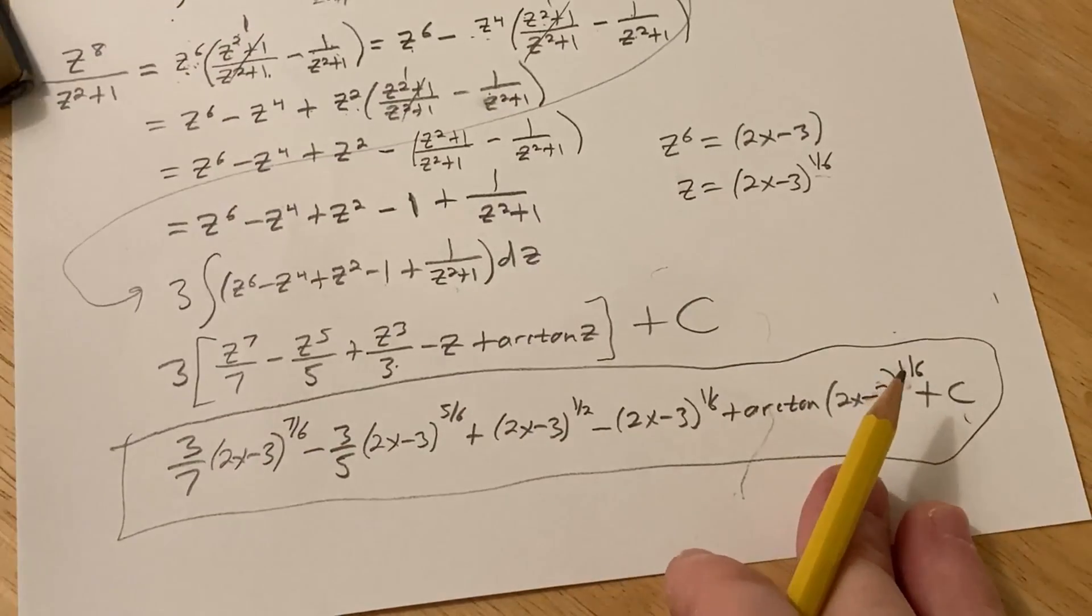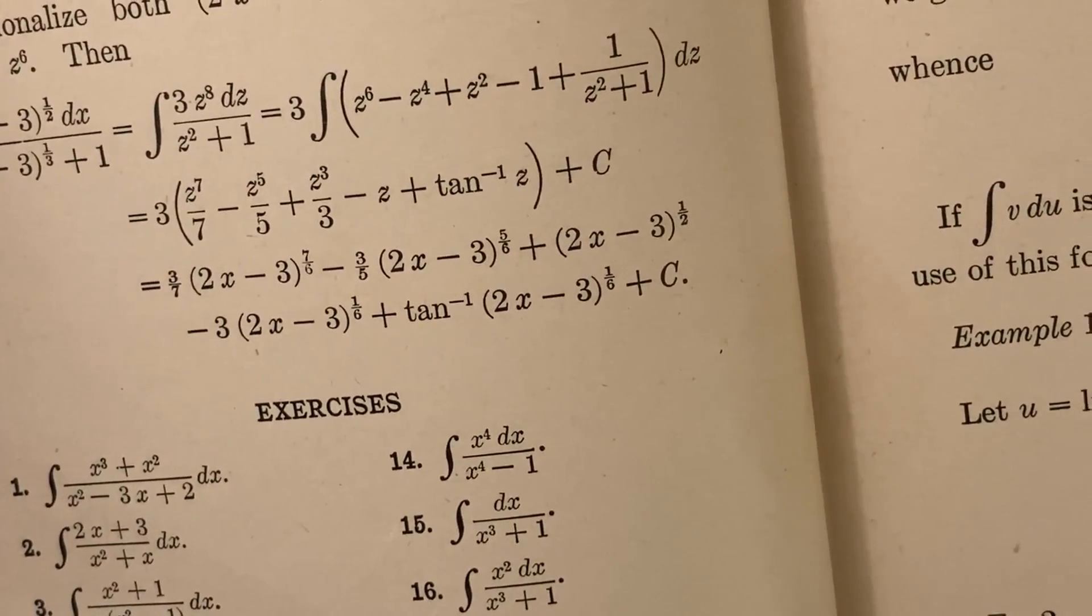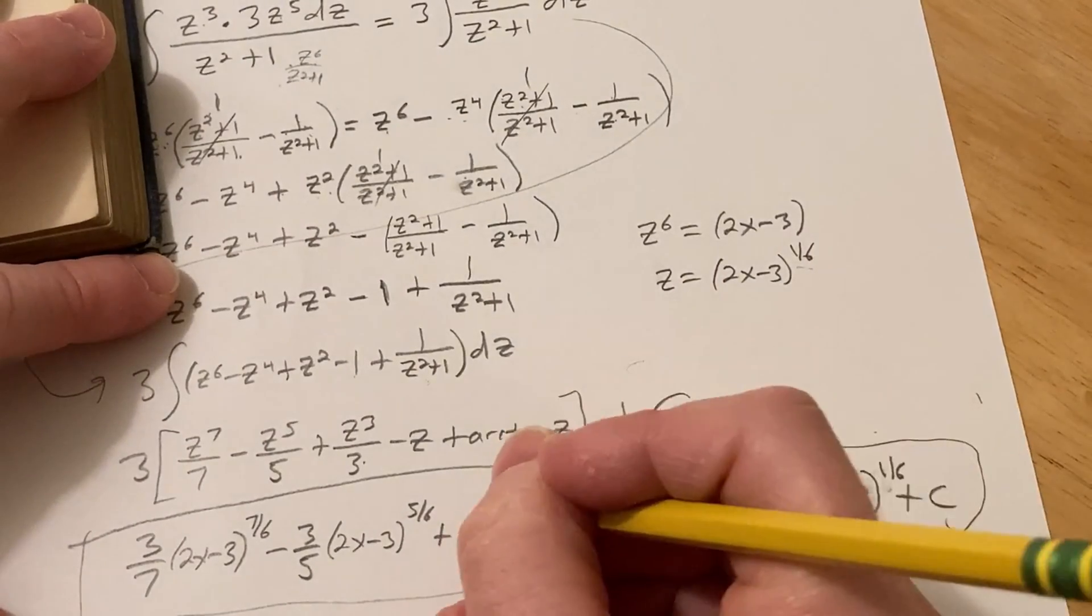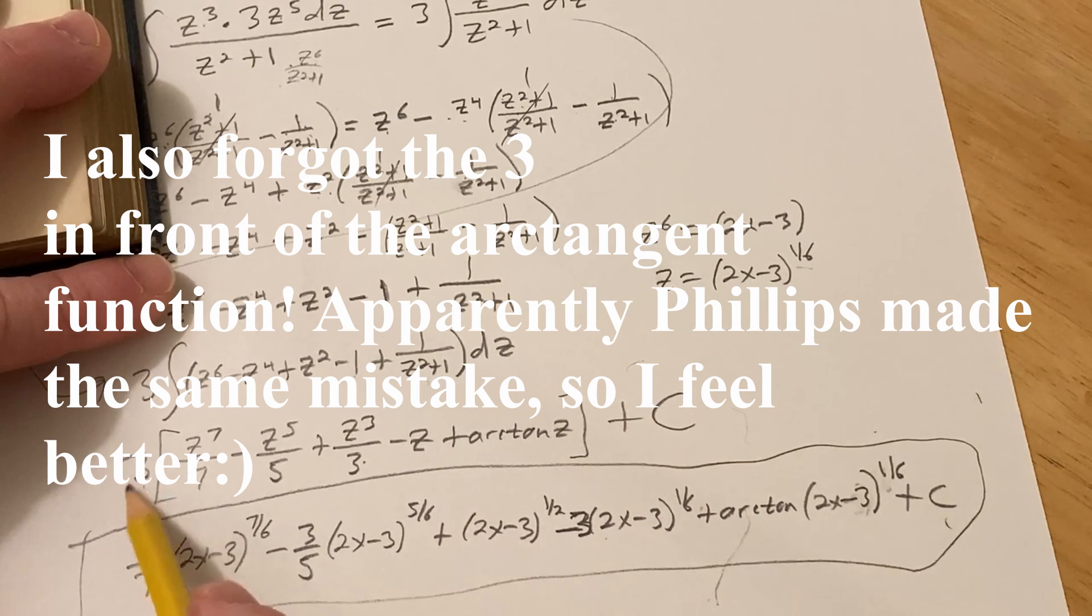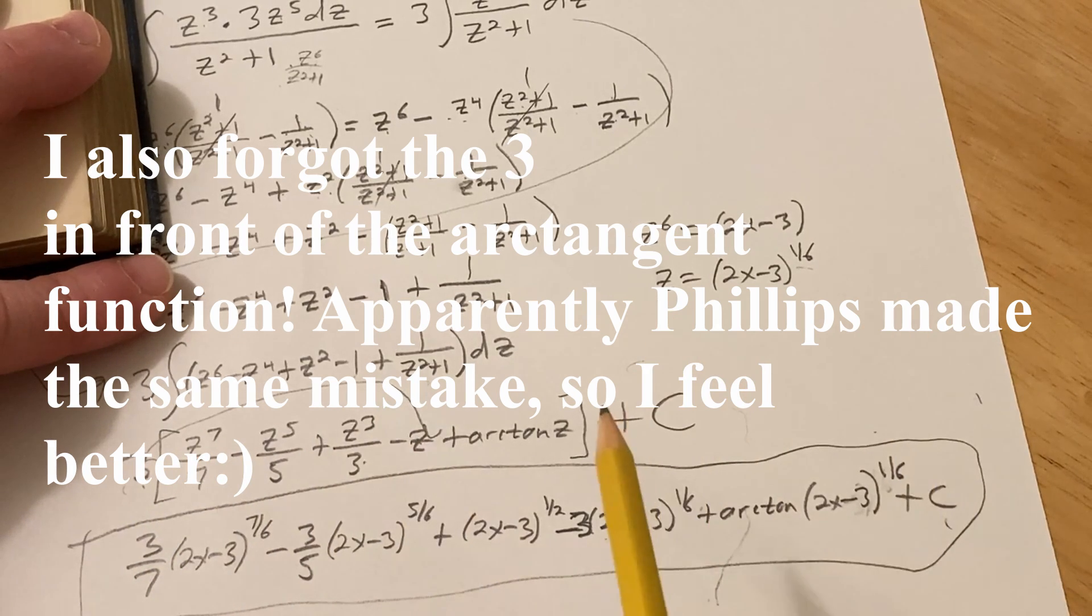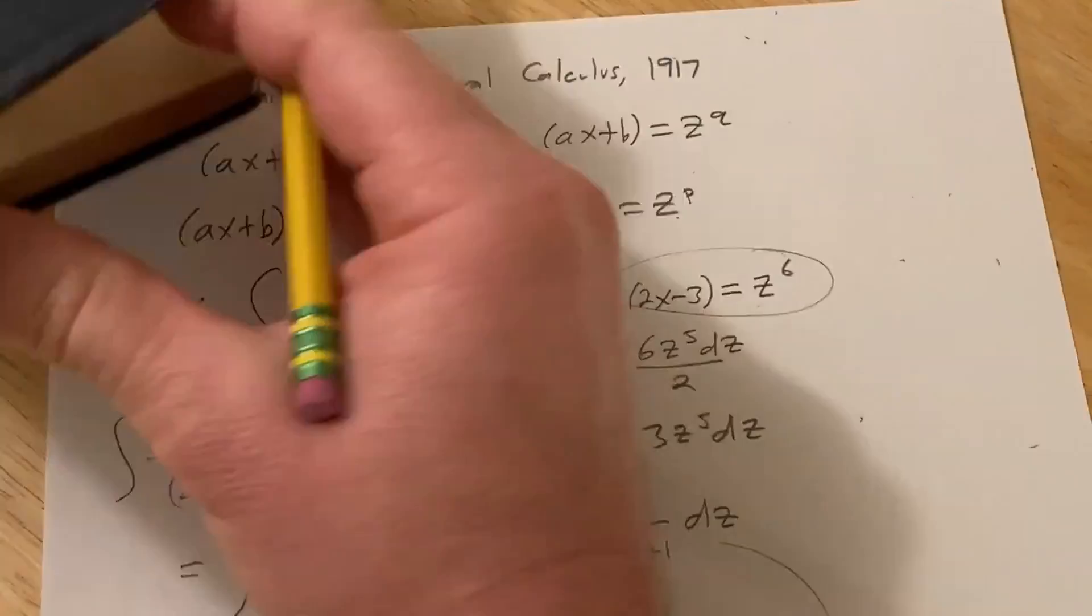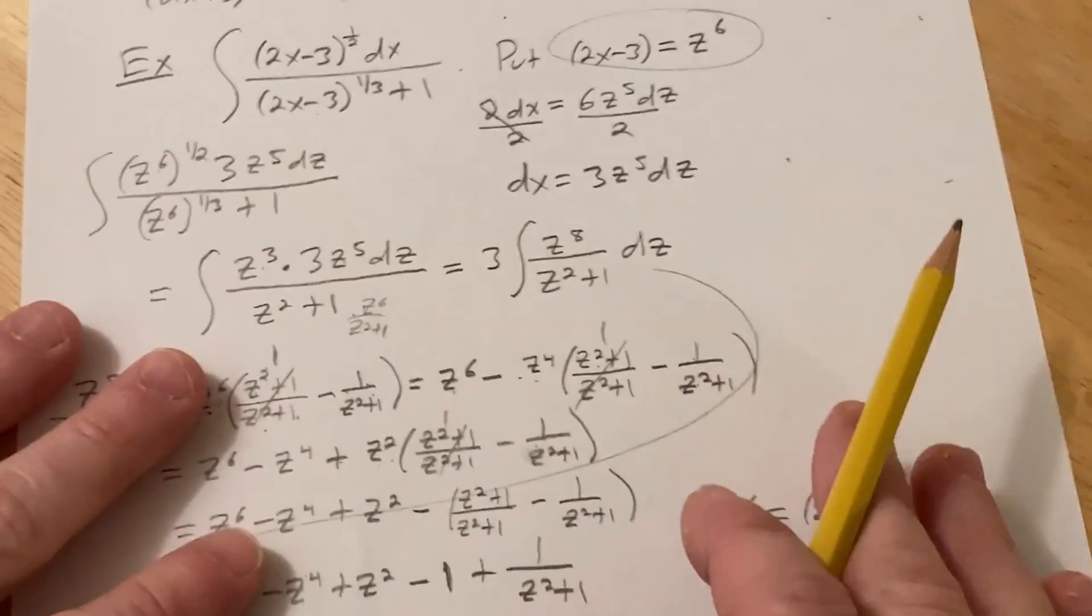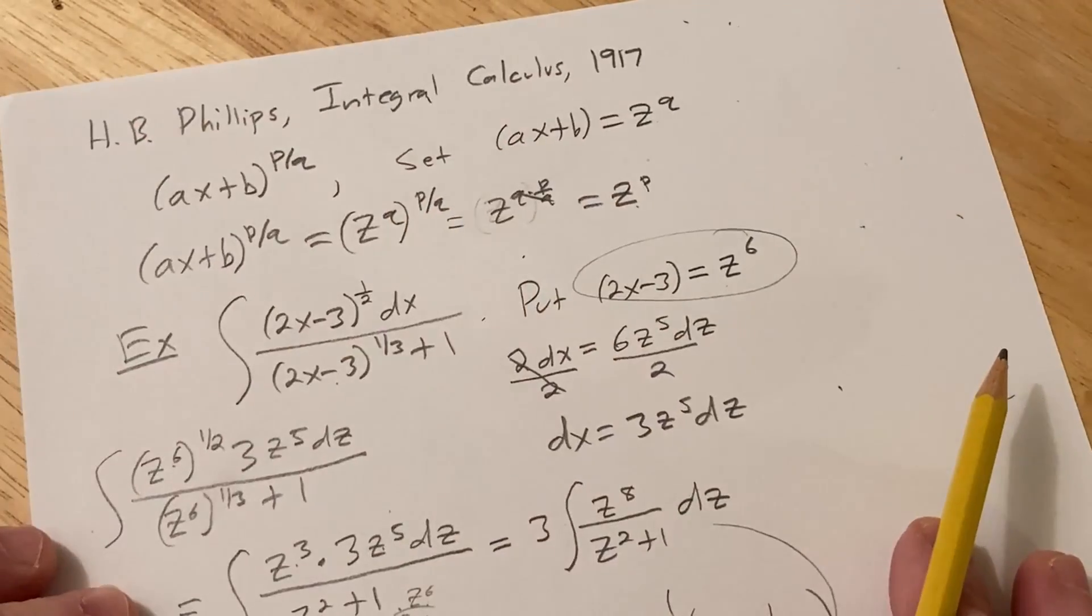And there we go. That is the solution and let's check here. Here's the solution given by Phillips. Looks pretty good to me. Oh, I forgot the 3 here. There's a 3 here from this 3 out here. So I forgot to multiply this 3 by this 3. So that would be the correct answer to this problem. And again, this is from Phillips, Integral Calculus, 1917, fun little book. If I can find it online, I'll leave a link in the description. Interesting technique, not something that you typically would see in a calculus course. So kind of a fun, weird integral technique from over a hundred years ago. Good luck.